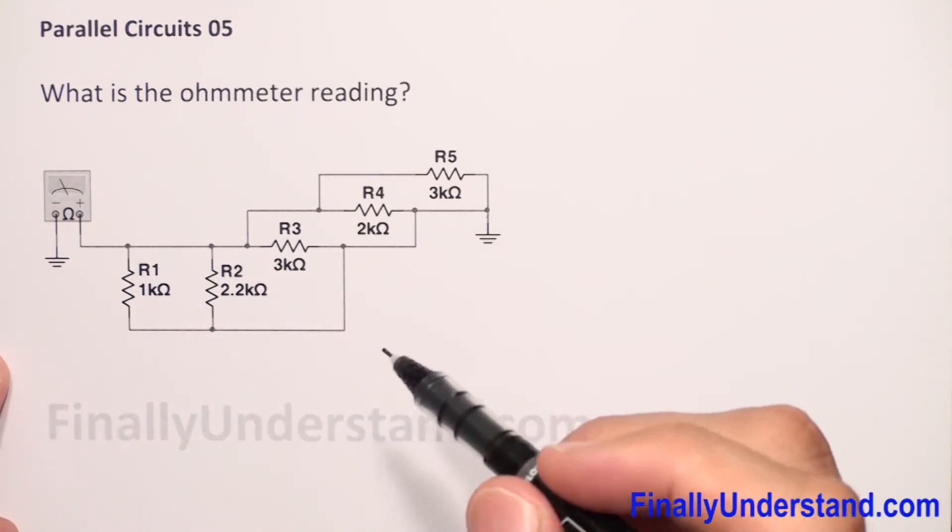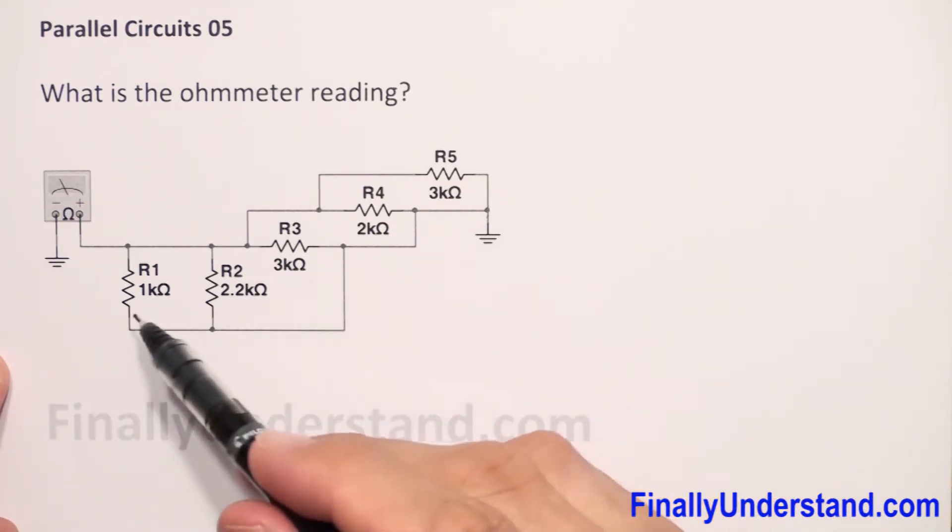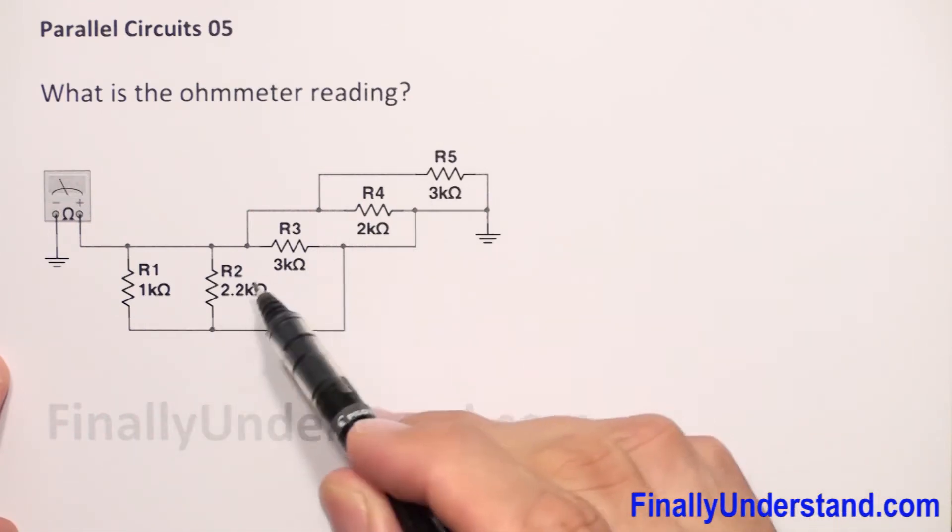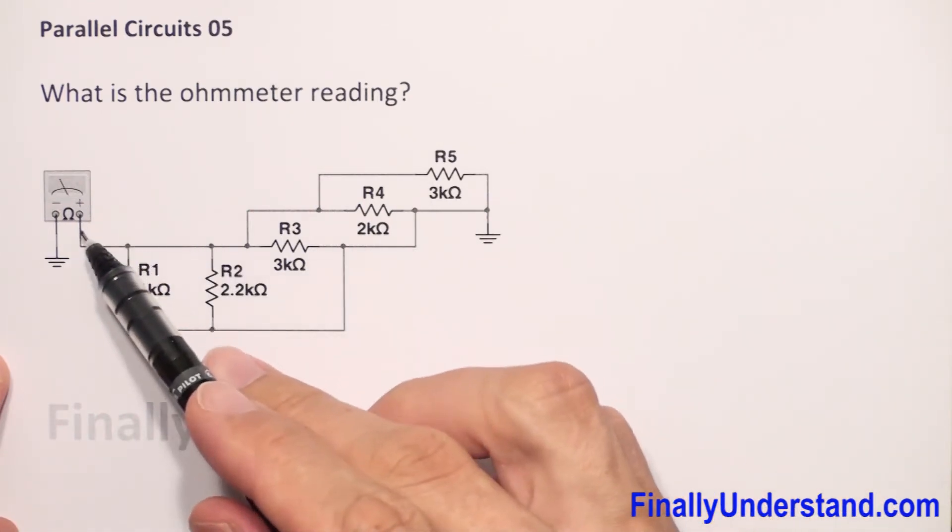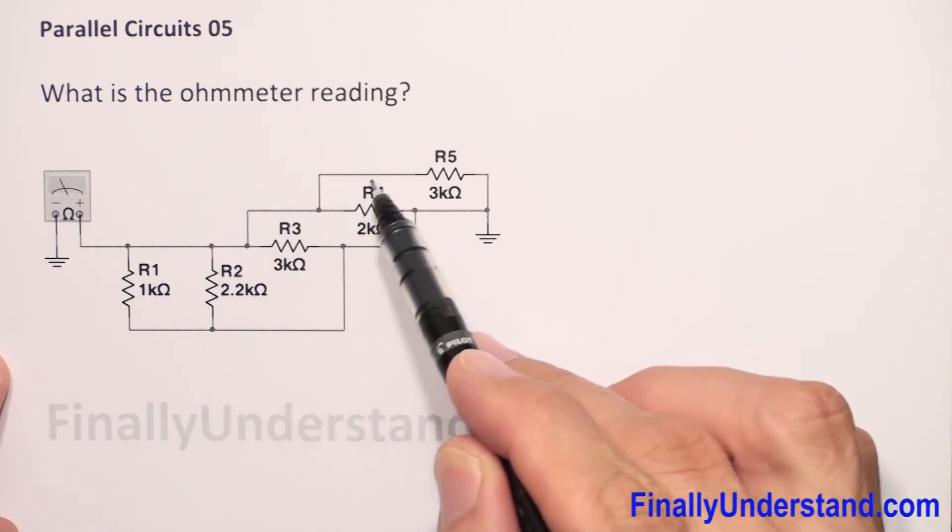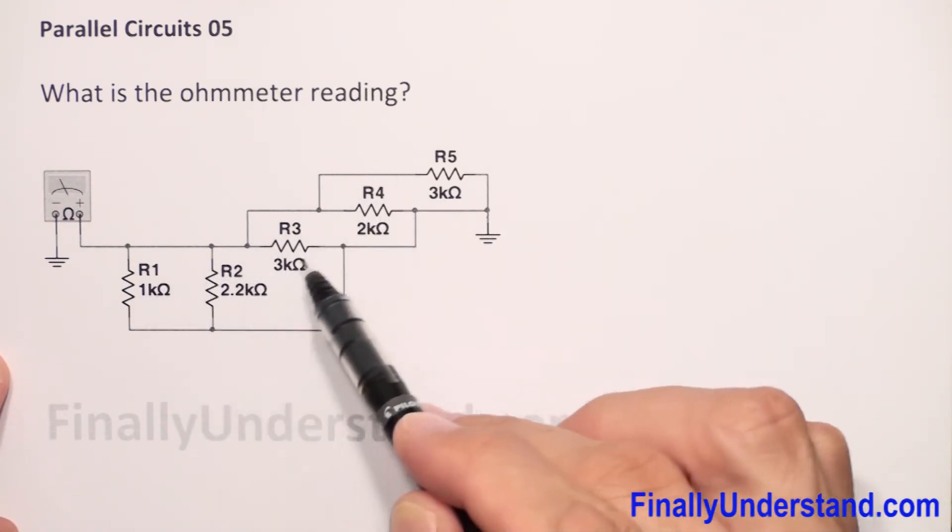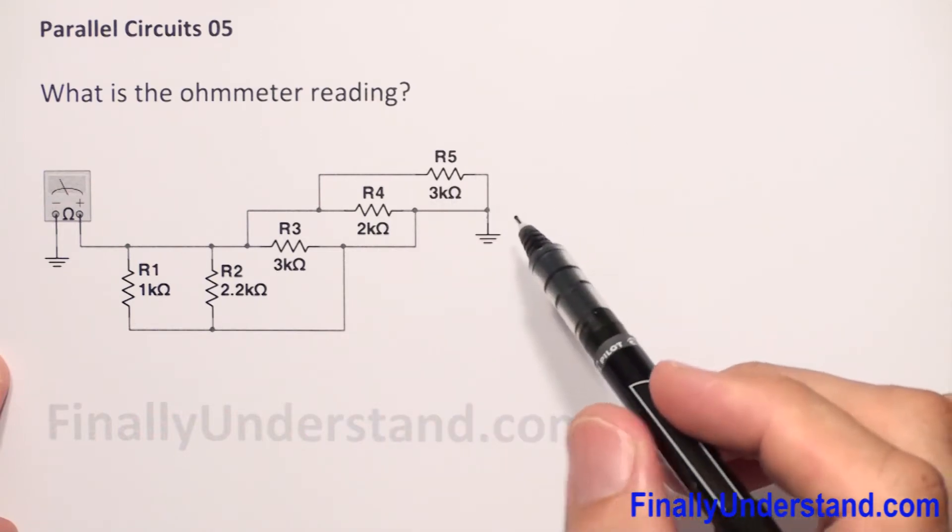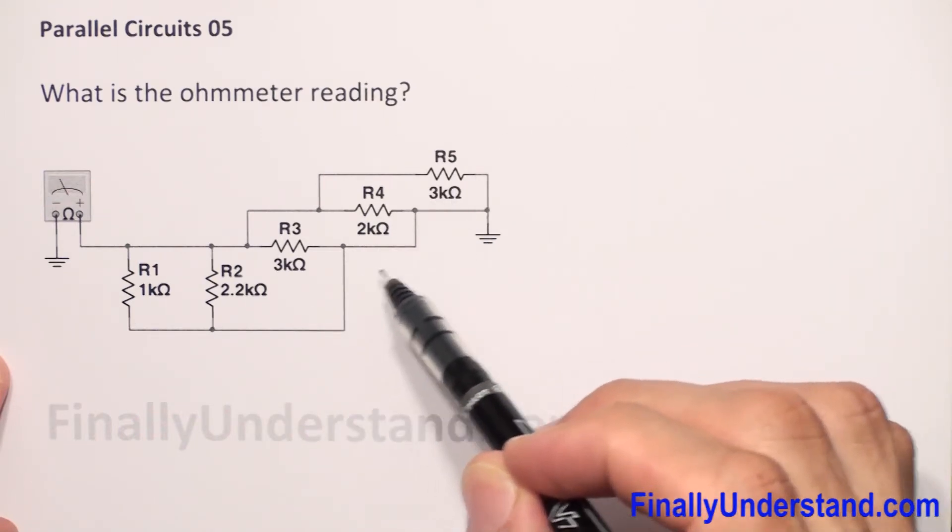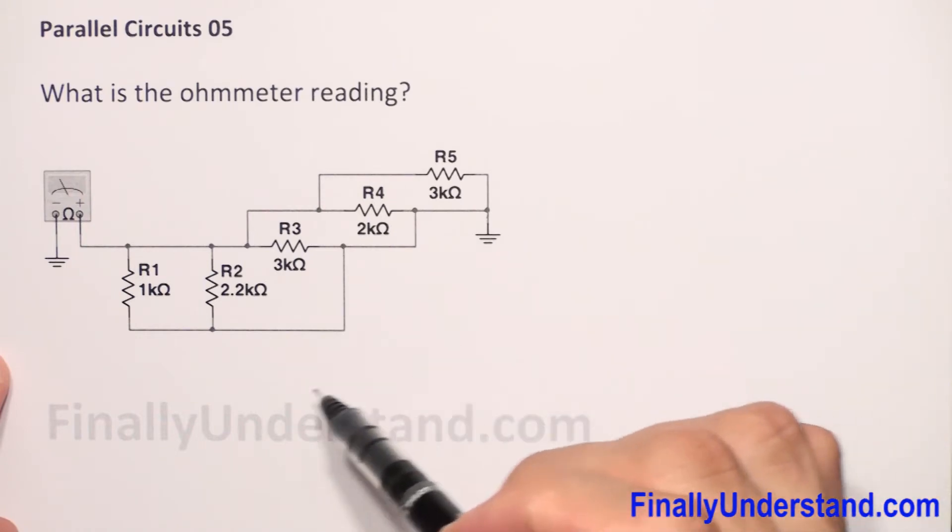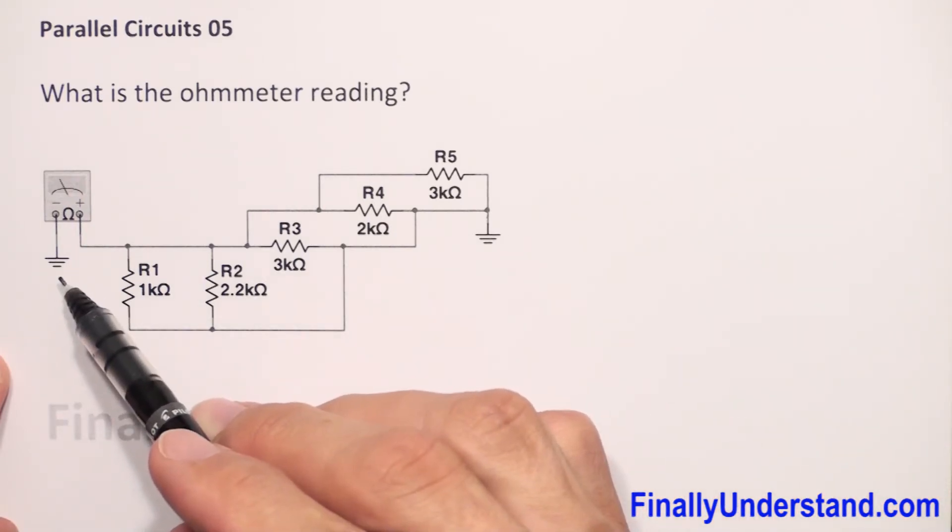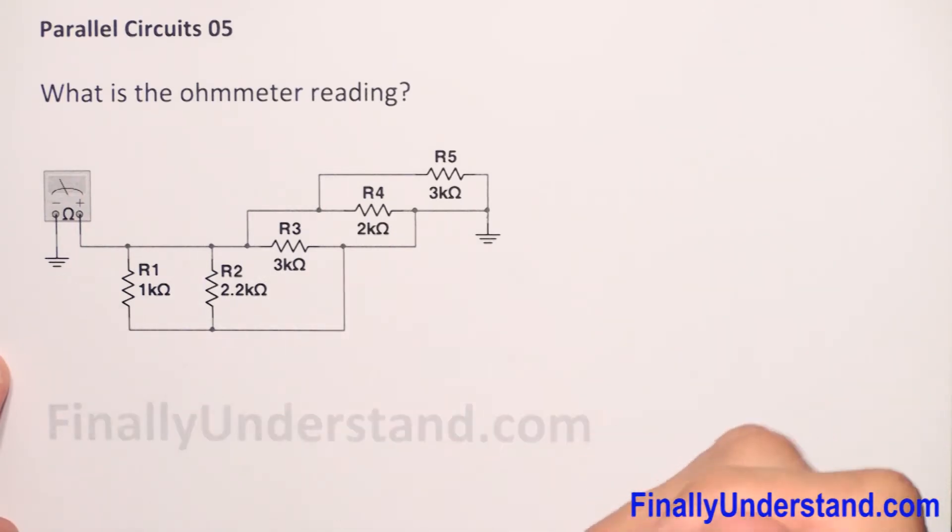So it means that these resistors are connected in parallel. One more time: the total current will go through these terminals, split into five different currents, and these currents are going to get back and flow to the ohmmeter as one total current. So it means that these resistors are in parallel.